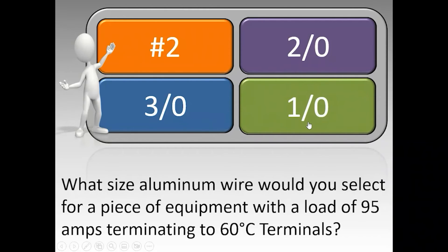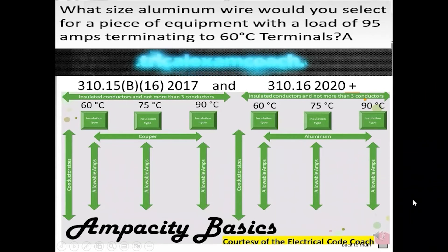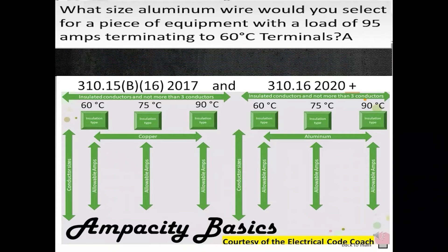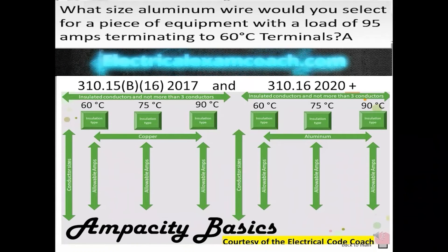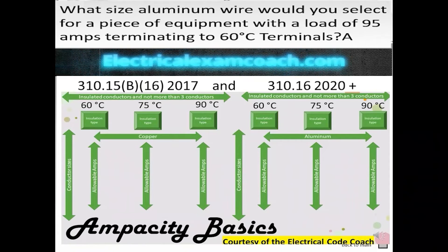The correct answer is 1-0. For this one, we head to our primary ampacity table. We look back at our question and be very careful to be on the right-hand side of the table because we're dealing with aluminum. Then we must be doubly careful to select from the 60-degrees-C column, because they're 60-degrees-C terminals. The correct answer is 1-0.